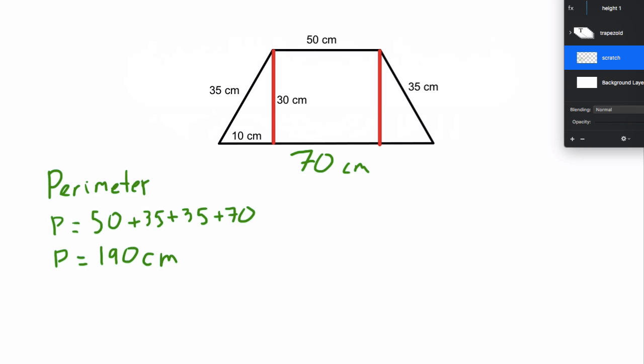Now that I have the top base and the bottom base and the sides and the height, I can go ahead and do the area. So area equals—we're going to add the top base, 50 centimeters, plus the bottom base, which is 70 centimeters. Then I'm going to divide that answer by two and multiply all of that by the height, which in this case is 30.